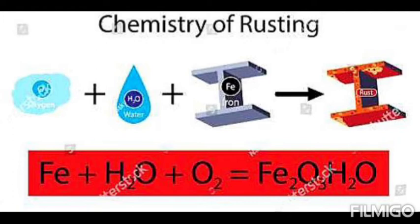When an iron article is exposed to water and oxygen, it gets oxidized. Water provides moisture and oxygen comes from air, so moist air is needed. When iron is exposed to these two things, it converts into iron oxide Fe2O3·H2O, where H2O is the water of crystallization. For rusting, water and oxygen are the most important requirements. If you do not provide one of them, the rusting will stop.